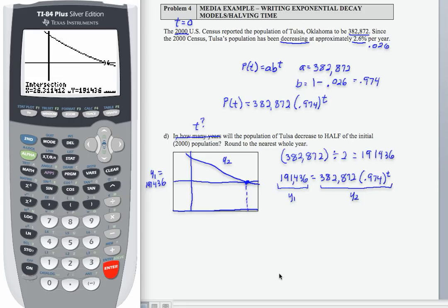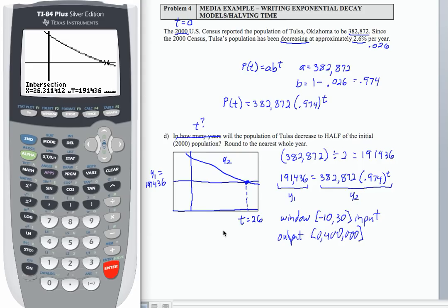So if I round here, I'm going to get T equals 26, and let's be sure and write our window because we did not write that here yet. So we changed our input window to negative 10 to 30, and the output was still 0 to 400,000.